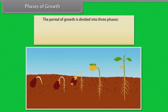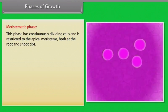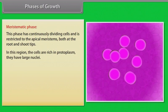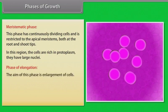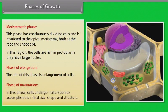Phases of growth: The period of growth is divided into three phases — meristematic, elongation and maturation. Meristematic phase: This phase has continuously dividing cells and is restricted to the apical meristems, both at the root and shoot tips. In this region, the cells are rich in protoplasm and they have large nuclei. Phase of elongation: The aim of this phase is enlargement of cells. Phase of maturation: In this phase, cells undergo maturation to accomplish their final size, shape and structure.